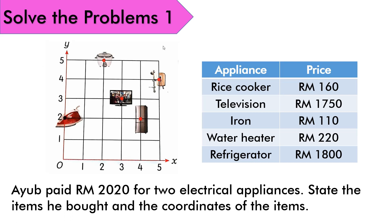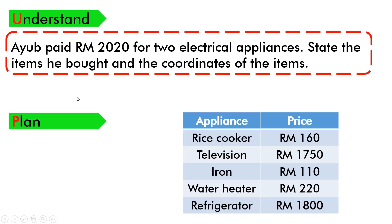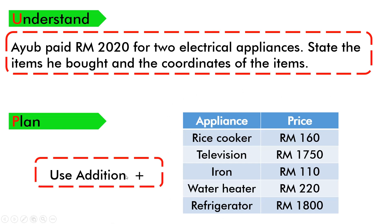First, understand. Ayub membayar RM2,020 untuk dua perkakas elektrik — nyatakan apakah item yang dibeli dan juga koordinat untuk setiap item tersebut. Second, plan. Kita nak guna operasi apa? Berdasarkan jadual yang ada, apakah dua item yang kita boleh dapatkan jumlah sebanyak RM2,020? Kita akan guna operasi tambah — we are going to use addition.